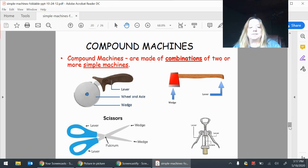The scissors has a lever, a fulcrum, lever, wedge. So that's a center point. And then we have the corkscrew, which has a lever and a screw.